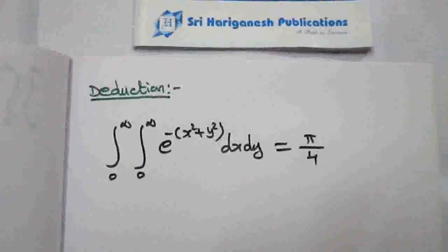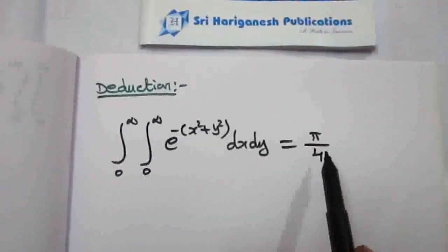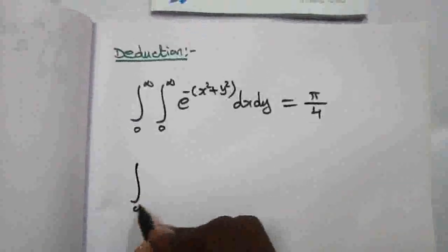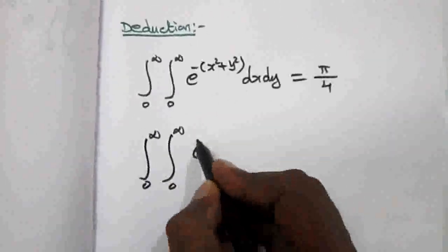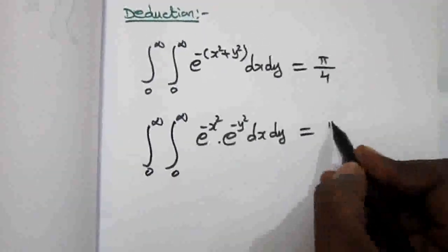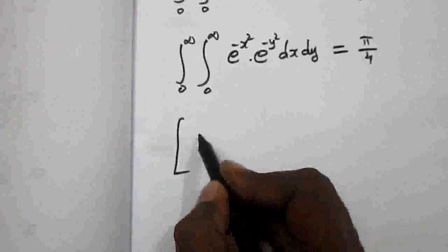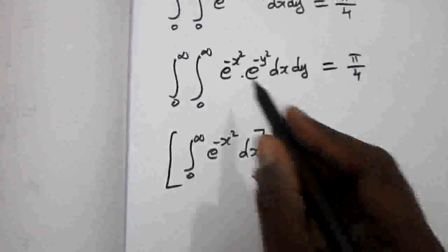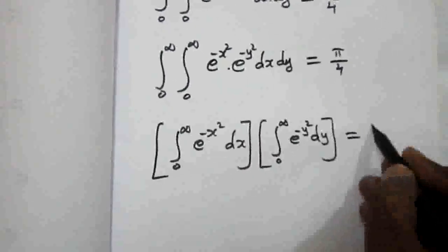Now the deduction part. We found the integral value is π/4. For the deduction, we separate the exponential function: the double integral from 0 to infinity, 0 to infinity, of e to the power minus (x squared plus y squared) dx dy equals e to the power minus x squared times e to the power minus y squared dx dy, which equals π/4. This separates into the integral from 0 to infinity of e to the power minus x squared dx, times the integral from 0 to infinity of e to the power minus y squared dy, equal to π/4.